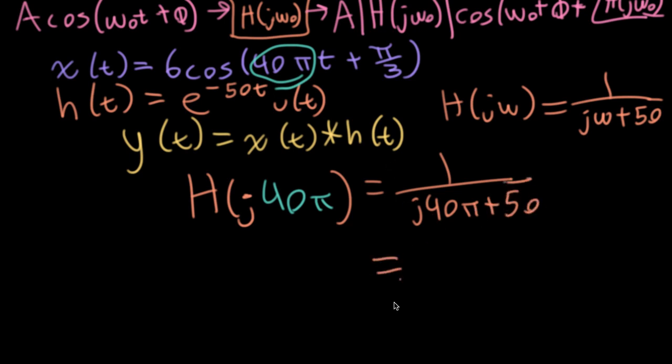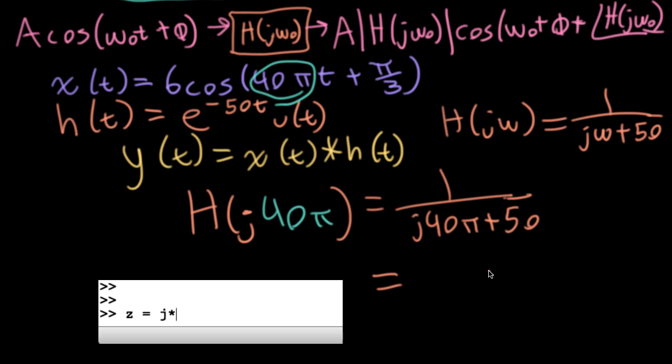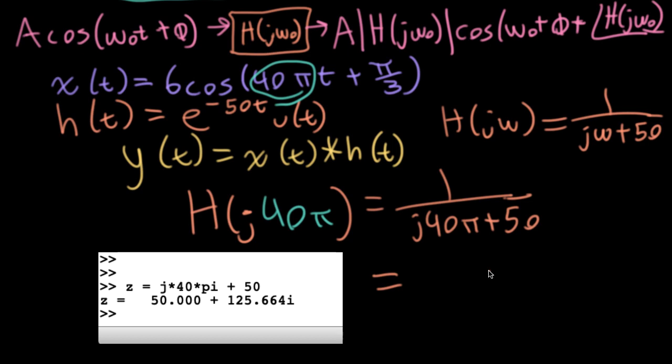I think the best thing to do is go ahead and pull out a calculator. In this case, I'm going to pull out Octave, which is an open source rewrite of MATLAB, which I'll basically use as a glorified calculator. So z is equal to j times 40 times pi plus 50, just so I have something to call this complex number. This is actually the denominator, so let me divide it by one. There we go.